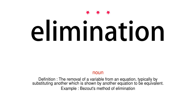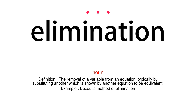Noun. Definition: the removal of a variable from an equation, typically by substituting another which is shown by another equation to be equivalent. Example: Bezout's method of elimination.